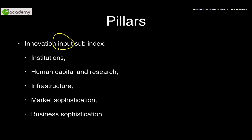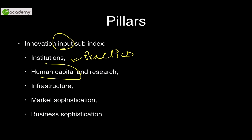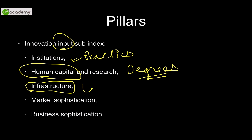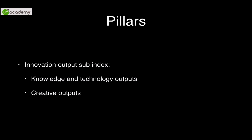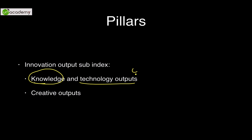The five pillars under the Innovation Input Sub-Index are: Institutions (practices and policies in place), Human Capital and Research (necessary degrees and infrastructure like laboratories), Infrastructure, Market Sophistication (how sensitive the market is to innovation), and Business Sophistication (how business evolves around innovations). The two output pillars are Knowledge and Technology Outputs and Creative Outputs. These are included in the GII calculation.